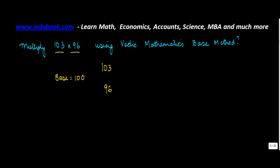Now subtract 100 from 103. 103 minus 100 gives you 3. Subtract 100 from 96, which gives you minus 4. The interesting thing is that while one of the differences is positive and the other is negative, the process remains the same.